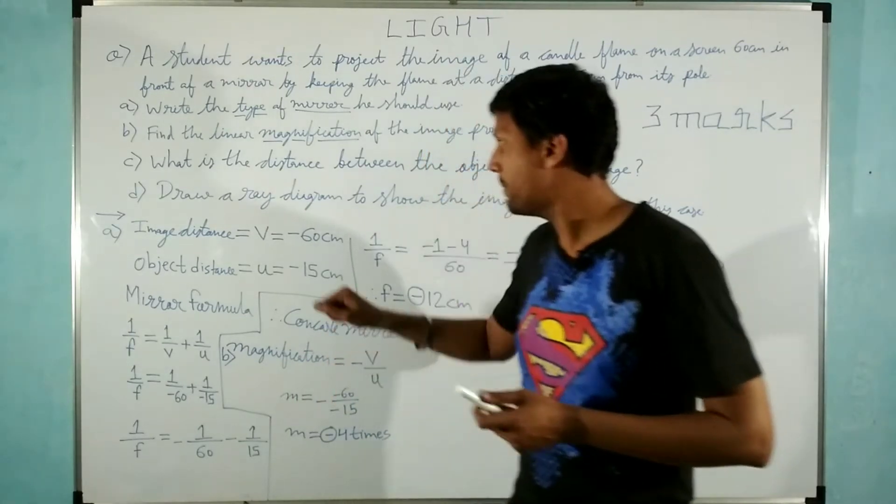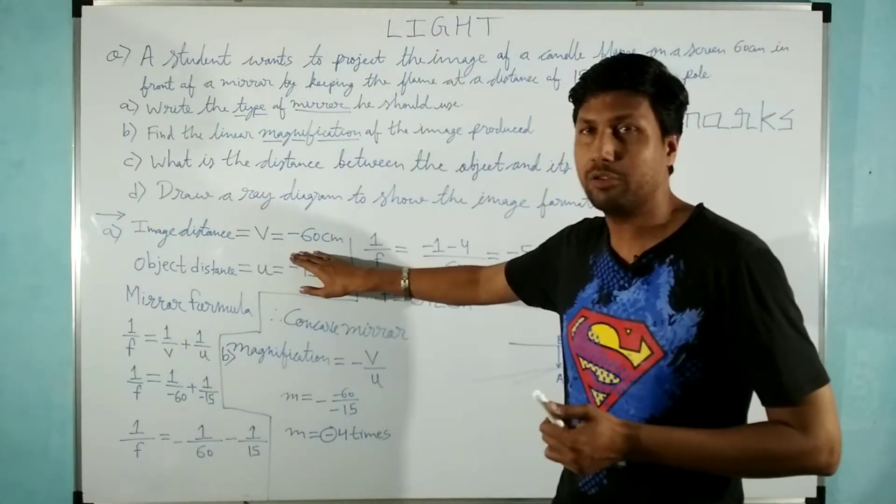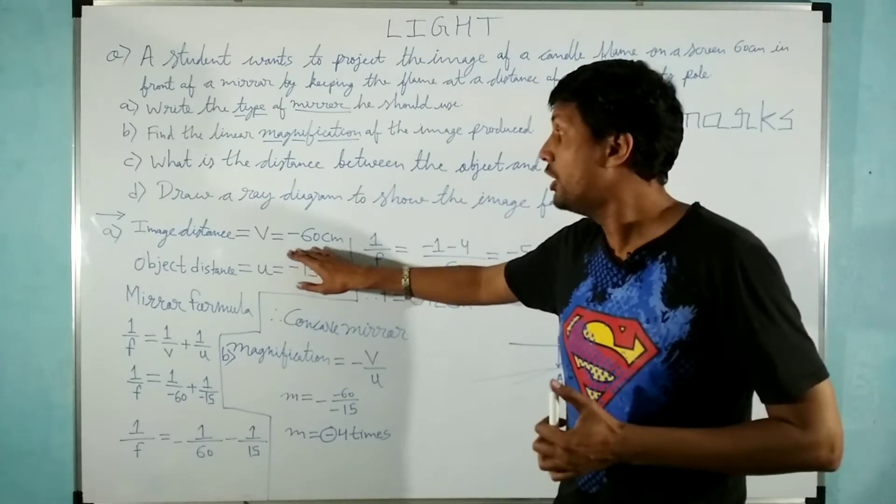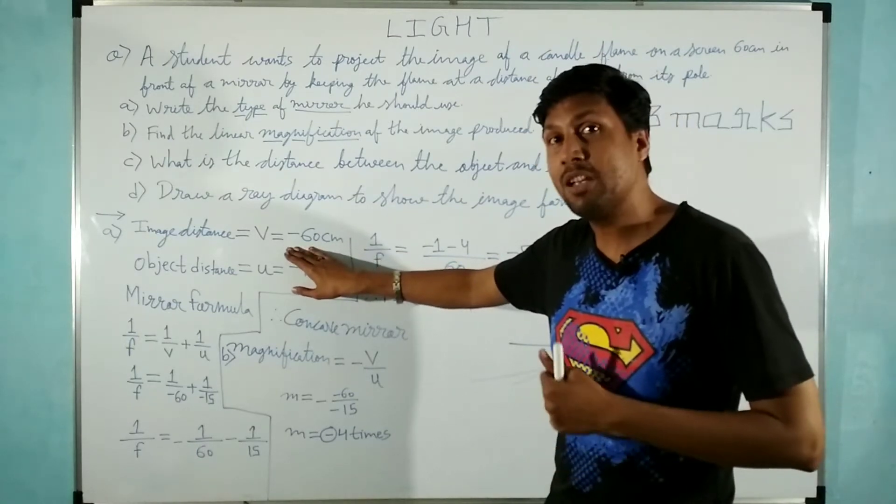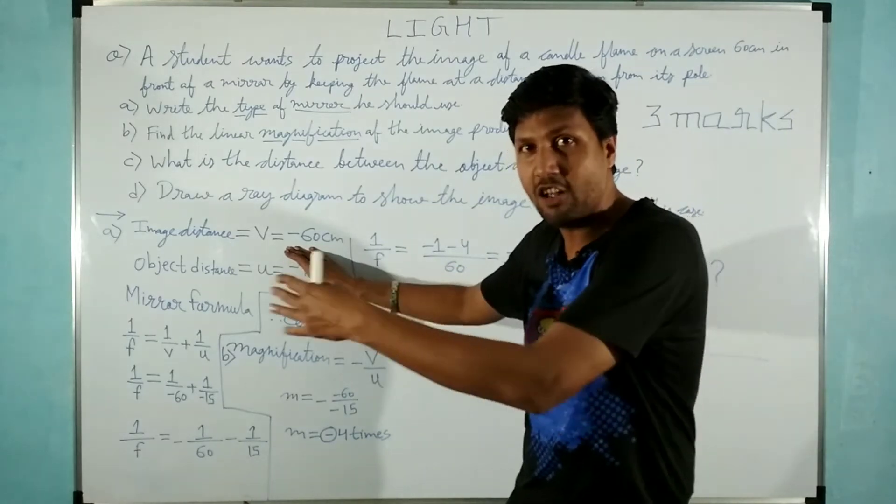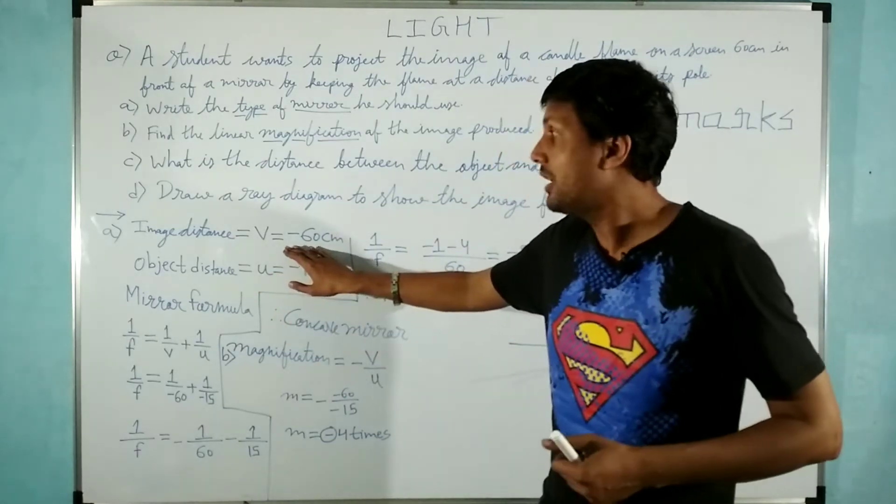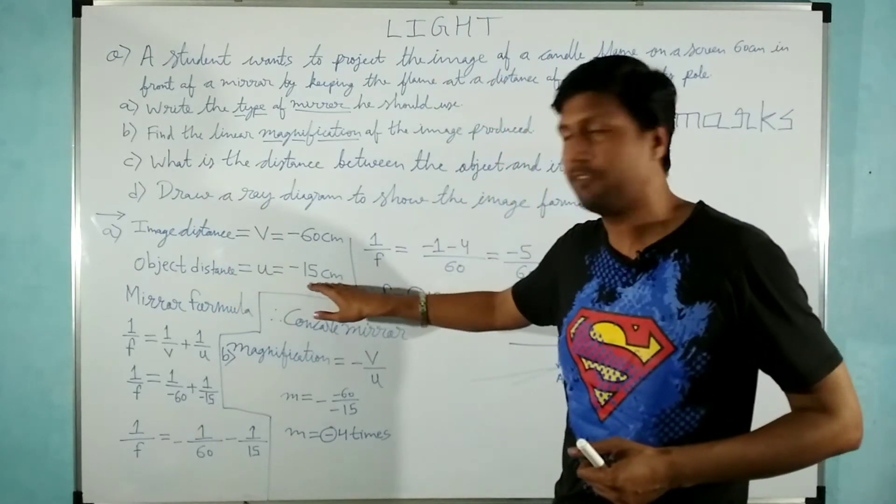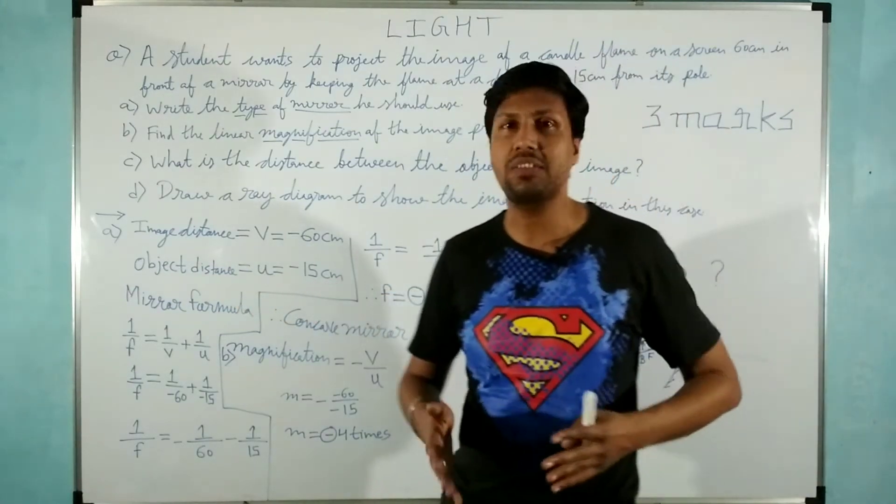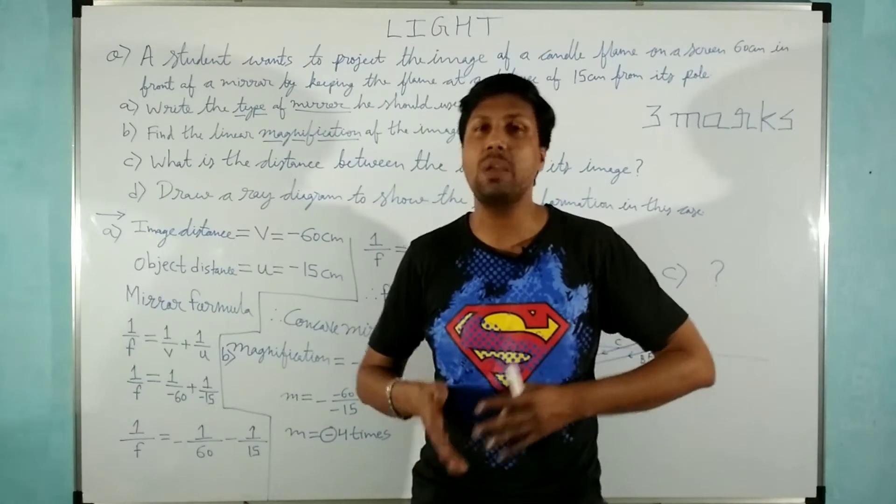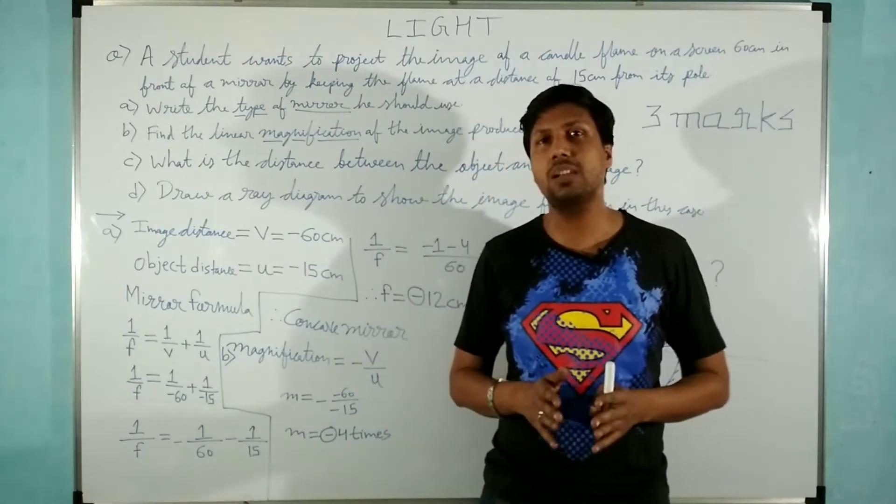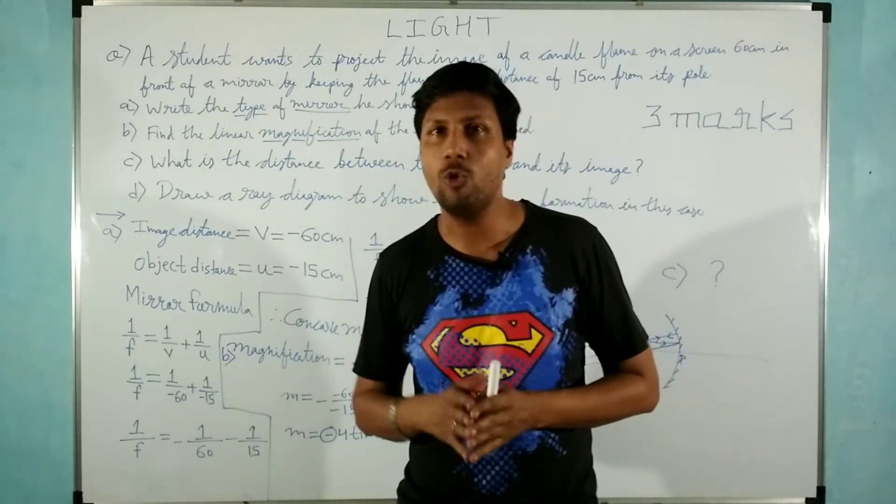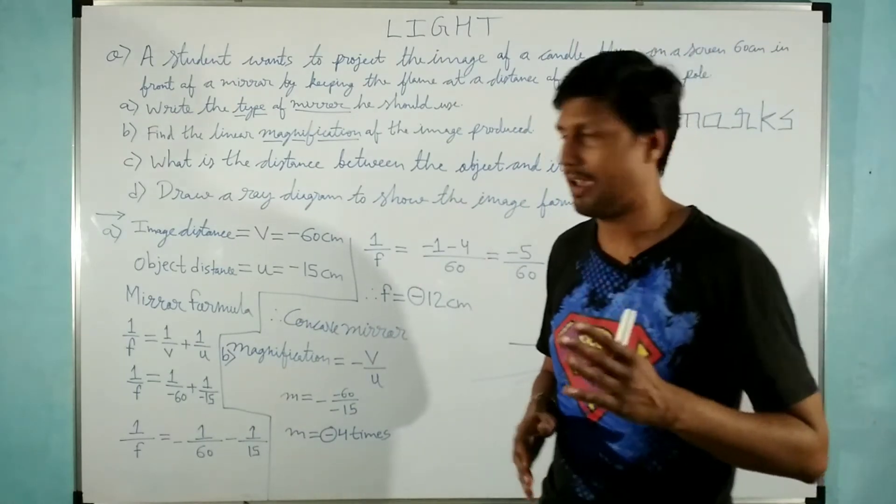So that's why I have taken minus 60 right here. The minus sign indicates that the image will be forming on the same side of the object only. Now the object distance u is minus 15. We all know that in every case it may be a mirror or a lens, the object distance is always taken in negative only.